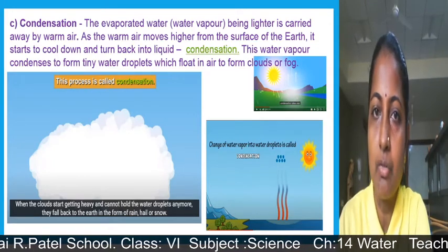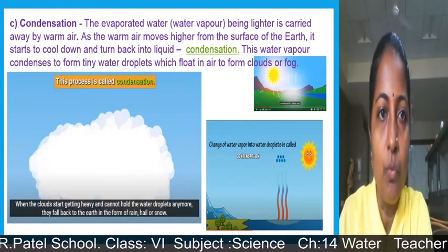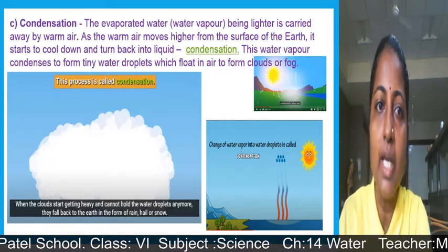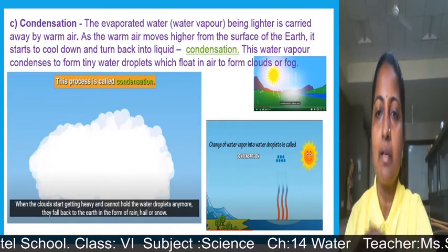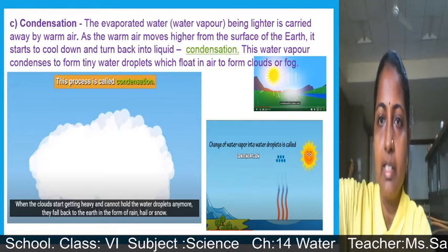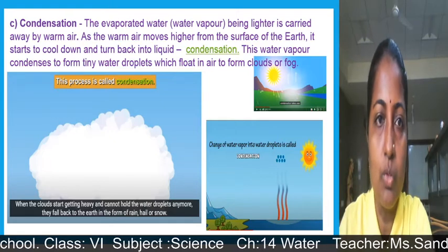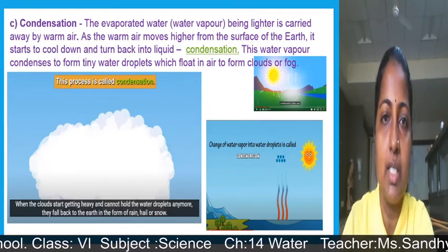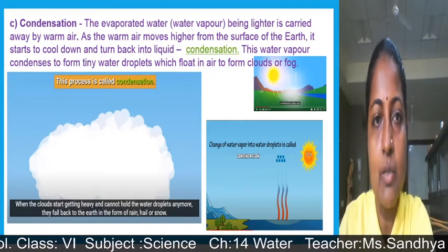Now about condensation: the evaporated water vapor, being lighter, is carried away by warm air. As the warm air moves higher from the surface of the earth, it starts to cool down and turns back into liquid — that is condensation. The water vapors rise up, and at the top the atmosphere is cooler, so the vapors condense and convert into drops of water.